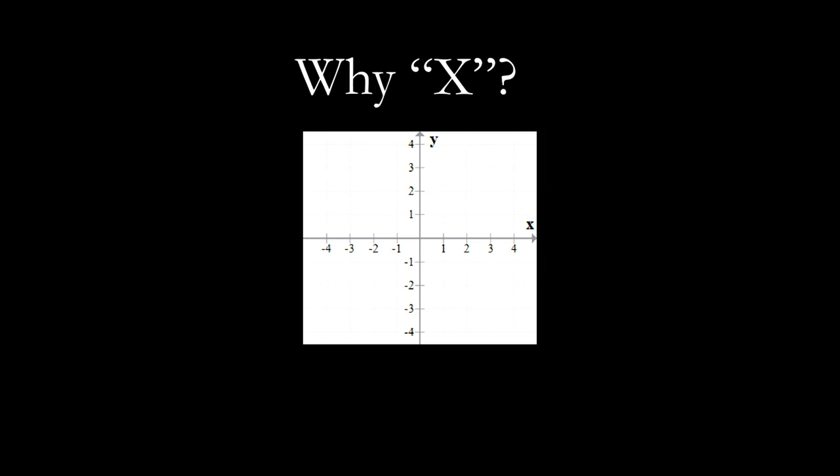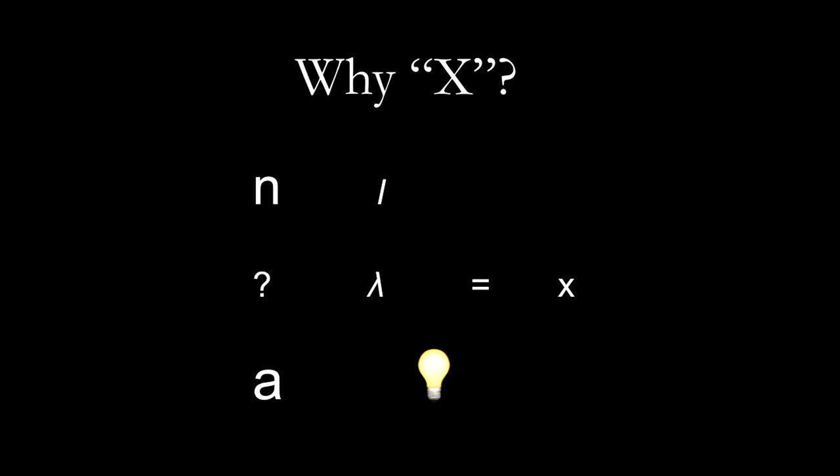But this is what we think of when we think of X. Everybody in this audience — X is a horizontal, Y is a vertical, maybe there's a Z that's kind of a depth. But I want to break that from all of you right now. No more. Because X is actually just a concept — a representation of just an unknown variable. So it could be an N, it could be a question mark, it could be a lambda, it could be an A, a lightbulb emoji. All of these are the same representations of what X actually means. It's just an unknown thing.